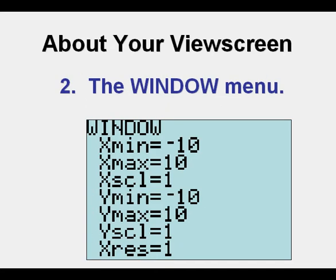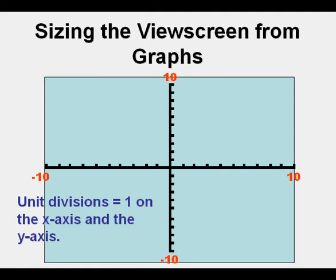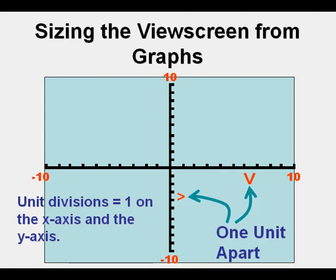The one we're going to use heavily today is the window menu. This is the default window menu. From the default window menu, we press graph — this is our standard view screen. As you can see, the lowest value of x is negative 10, the highest value of x is positive 10, and the unit divisions are 1 on both the x-axis and y-axis.